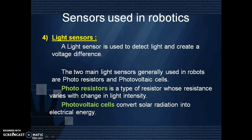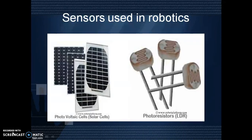The fourth one is light sensors. A light sensor is used to detect light and create a voltage difference. The two main light sensors generally used in robots are photoresistors and photovoltaic cells. A photoresistor is a type of resistor whose resistance varies with change in light intensity. Photovoltaic cells convert solar radiation into electrical energy. These are the photovoltaic cells on the left side and photoresistors on the right side.